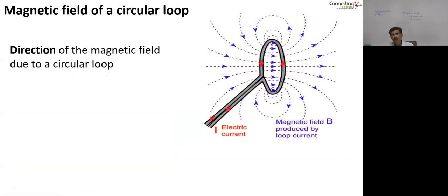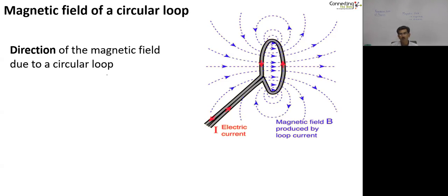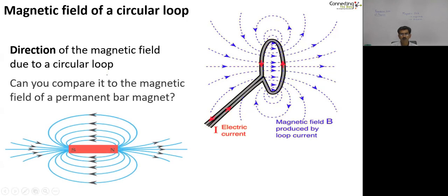Let us now look at the magnetic field of a circular loop — a current-carrying conductor which is bent into a loop. Using the same right hand thumb rule, you can determine the magnetic field lines produced by a circular loop in which a current is flowing. You can compare it with the magnetic field lines of a permanent bar magnet and see that there are some similarities — in fact, we will come back to it in a little while.